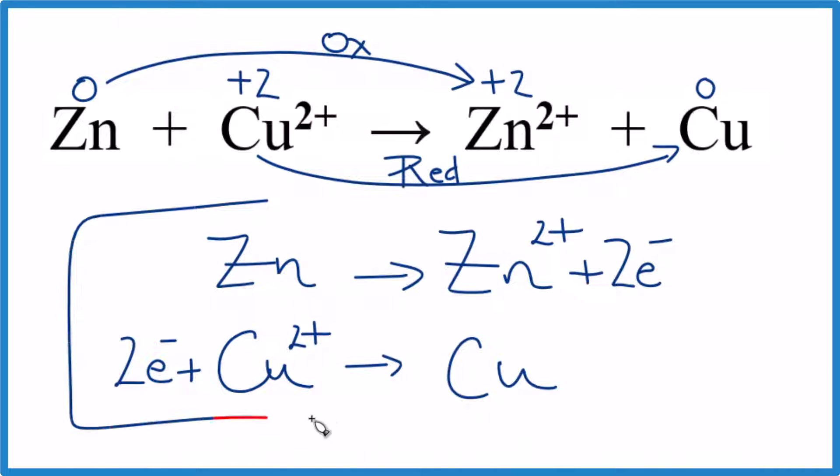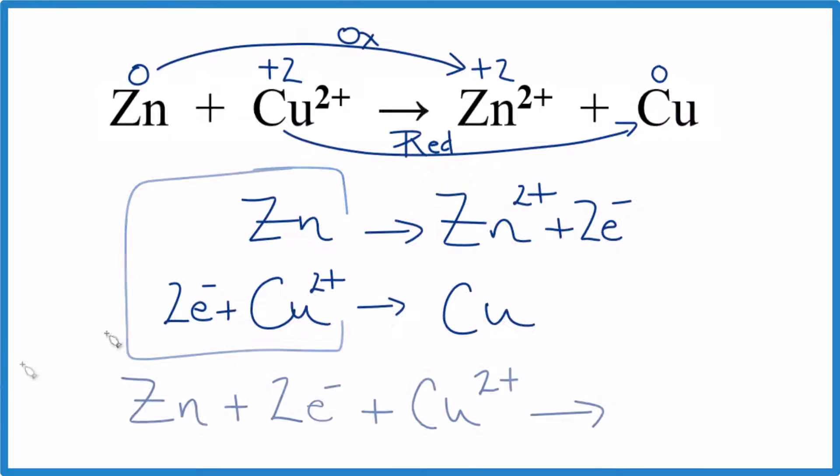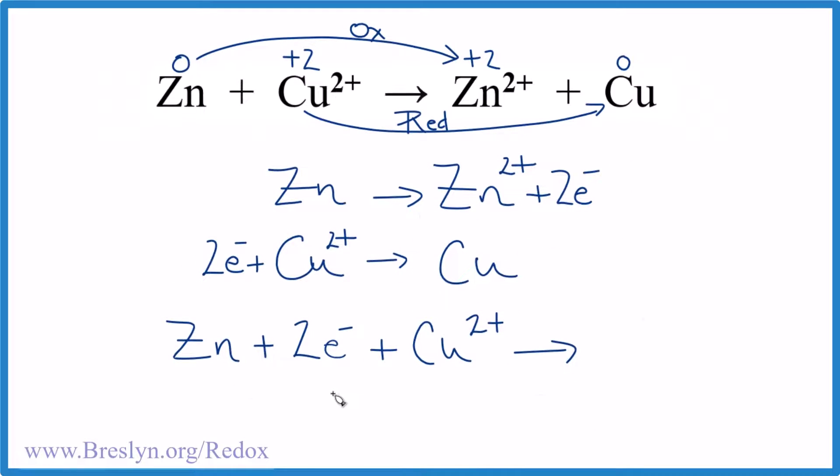Over here, these are the reactants right here. Let's put those together. We have our zinc, our two electrons, then our copper 2 ion. Over here, these are the products. Let's put those down here. We have our zinc ion, our two electrons, and then the copper.